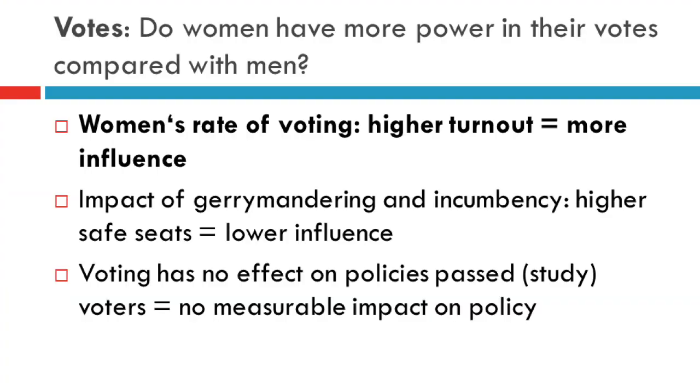People asked in the last video: if women vote at a higher rate than men, does that mean we don't have patriarchy? The answer is no. The basic premise of that idea is that women turn out at a higher rate, therefore they have more political influence. What this fails to take into account is the structural impact of gerrymandering on House seats, and a study demonstrating that voting has no effect on the policies that are passed, meaning that both men and women's votes really don't impact policy at all.